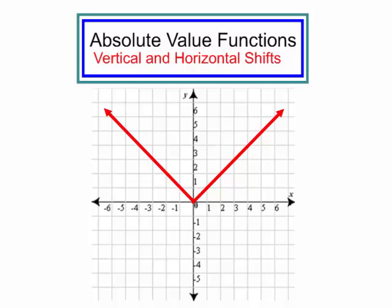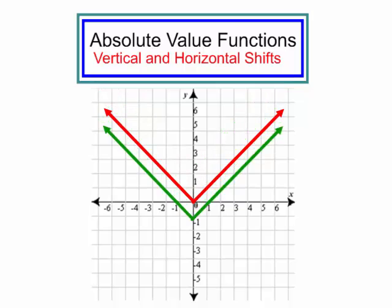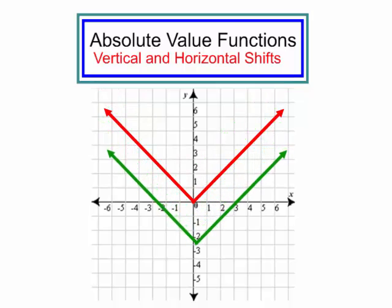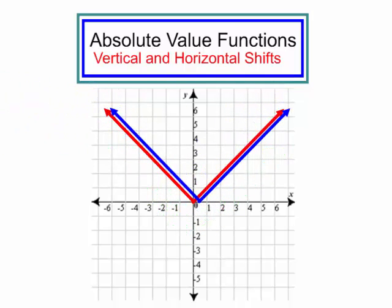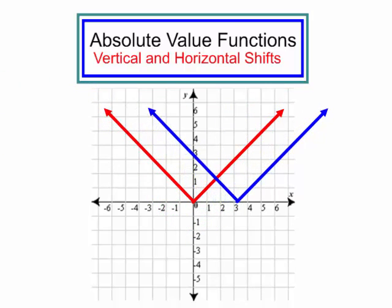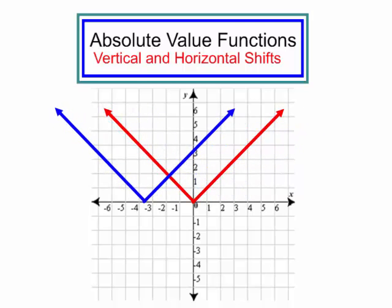We are going to talk about absolute value functions when they have a vertical or a horizontal shift. If it has a vertical shift, the function will move up or down. If the function has a horizontal shift, it will move to the right or to the left. Let's get started.